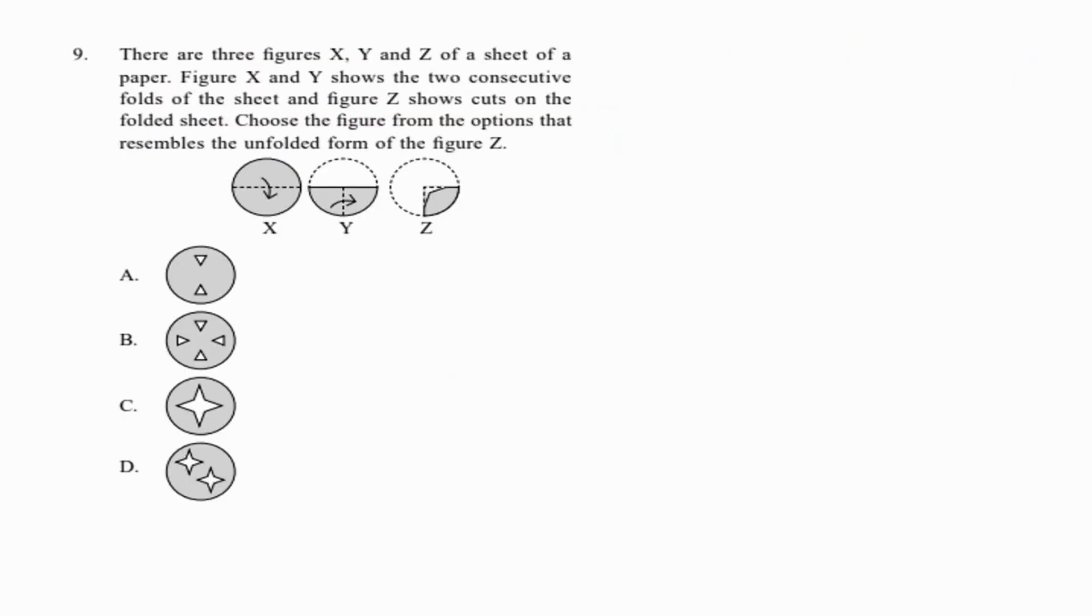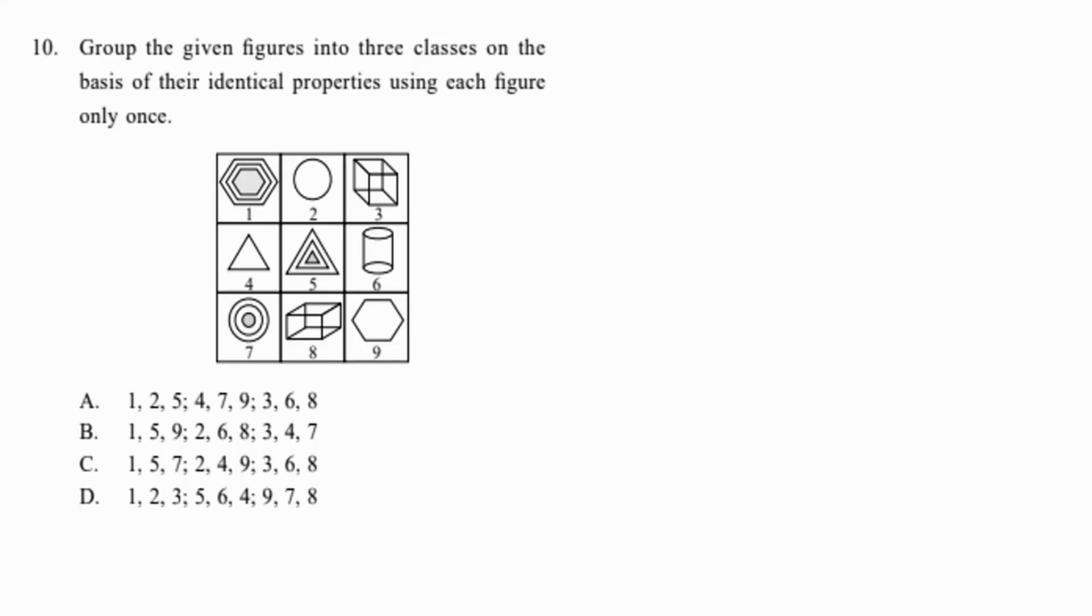Three figures X, Y, and Z show a sheet of paper. X and Y show two consecutive folds, and figure Z shows a cut on the folded sheet. First it's folded in half, then into quarters, and this is the cut made. When unfolded, the quarter unfolds first, then the half, creating the pattern in option C. That's the unfolded form.